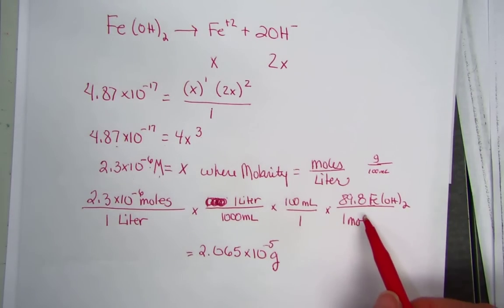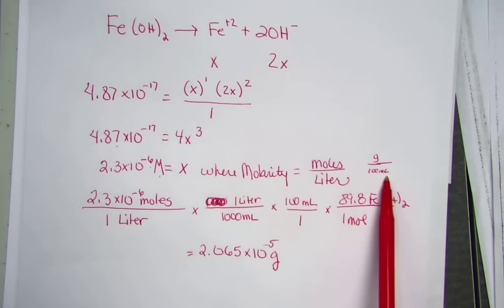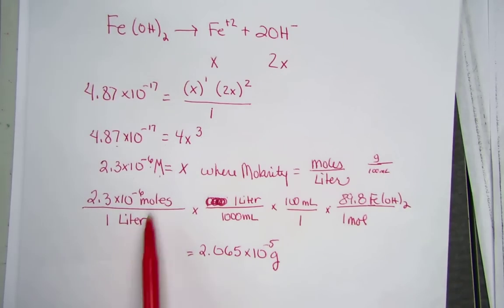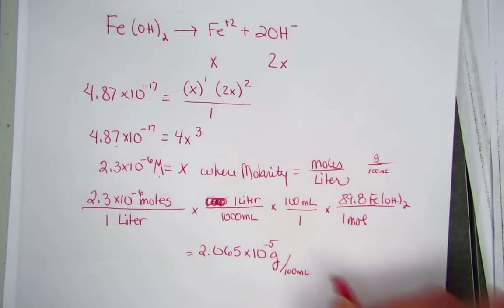In order to turn our mole unit into gram units, we needed a molar mass. 89.8 is our formula weight of FeOH2. Converting big M moles per liter into units of grams per 100 mils converts x, where it stood as molarity, into gram units in 100 milliliters of solution.